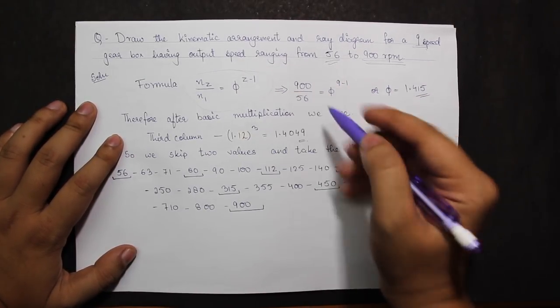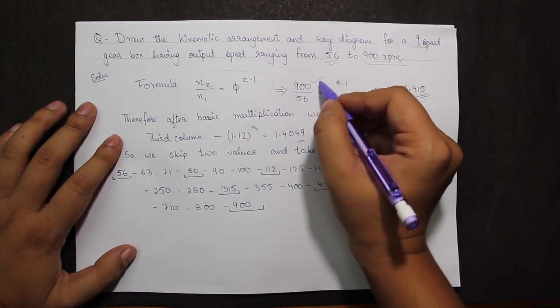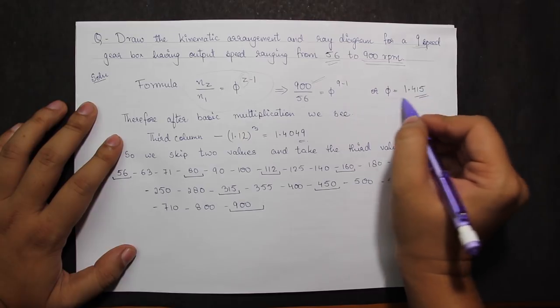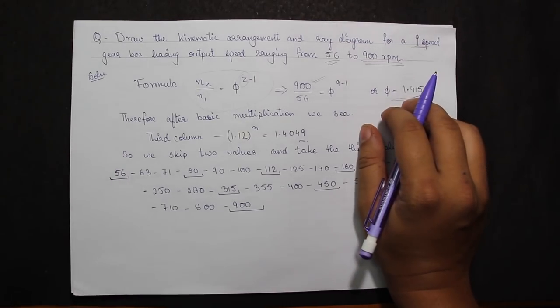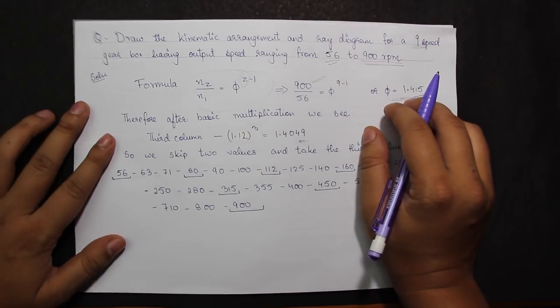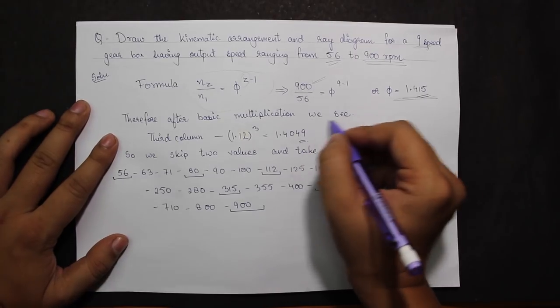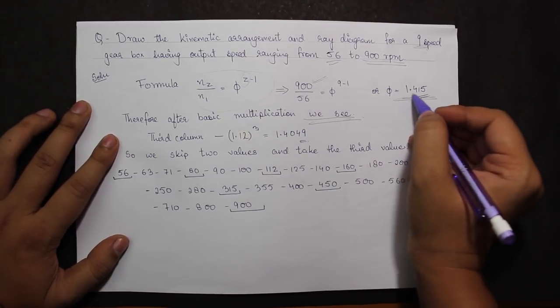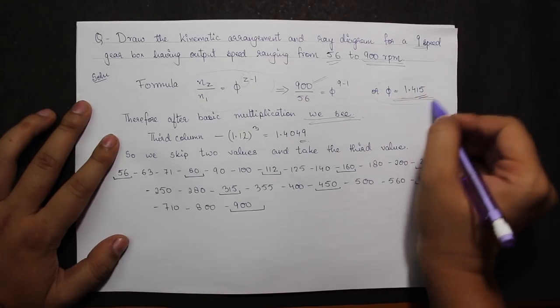Here the z value would be 9, so I get φ as 1.415. Therefore, after basic multiplication and from the reference of the previous video, I know that I have to convert this 1.415 as the multiplication of the φ values present on page 7.20.